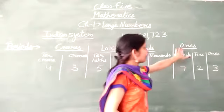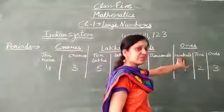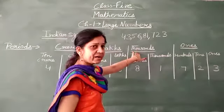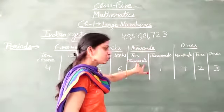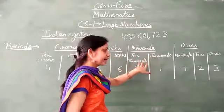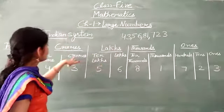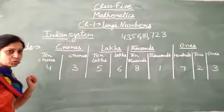The last period is of ones period in which there are 3 places - hundreds, tens and ones. Then thousands period in which there are 2 places - thousands and ten thousands. The lakh period - lakh and 10 lakhs. Then crore periods - crore and 10 crore.